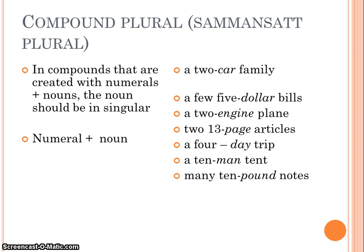We also have compound plurals. In compounds that are created with numerals and nouns, the noun should be in singular, such as a two-car family, a few five-dollar bills, a two-engine plane, and two thirteen-page articles.